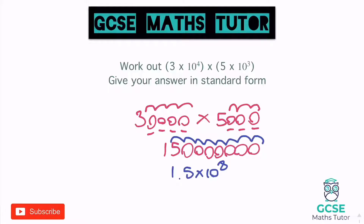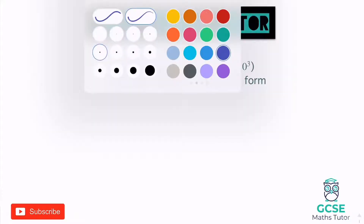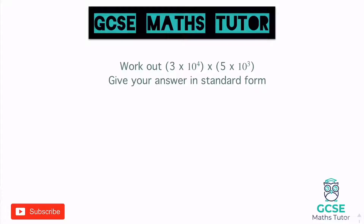That is the final answer, but we're going to look at a little trick to speed this process up. We can look at just the numbers at the start — multiply 3 by 5, which gives us 15. So we know it's going to be 15 times 10 to the power of something. Let's put it straight into standard form.